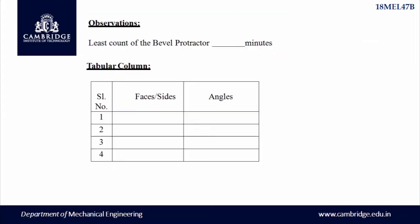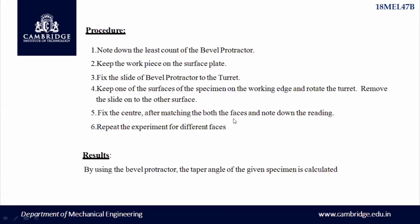The least count of the bevel protractor is 5 minutes — 60 minutes divided by 12 equals 5 minutes. In the observation table for the given standard component, you need to measure the angle between the two faces and record values in degrees and minutes. Now this is the procedure followed to take the reading from the vernier bevel protractor.